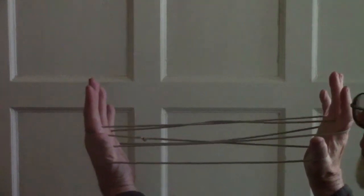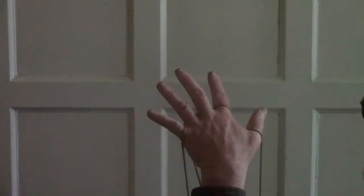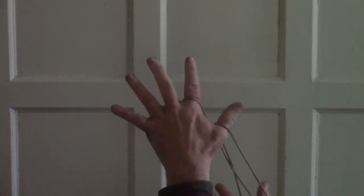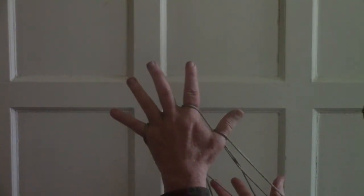Now how do we get from opening A to Cat's Cradle? Well, you'll notice there are three loops on three fingers.